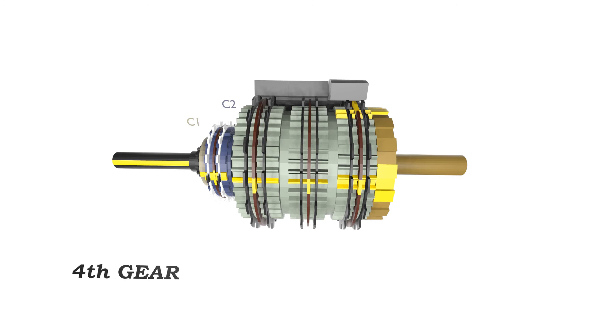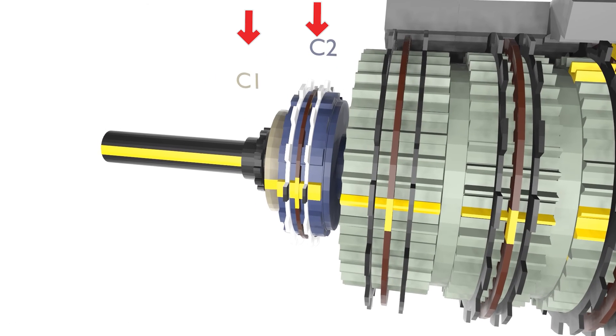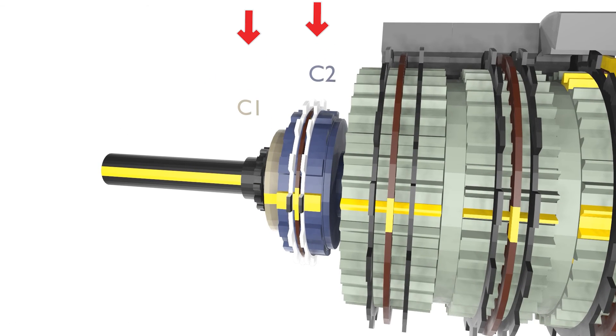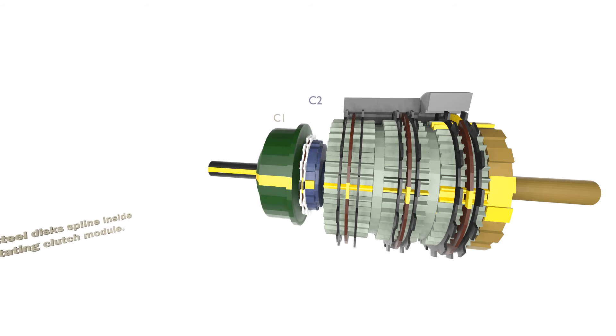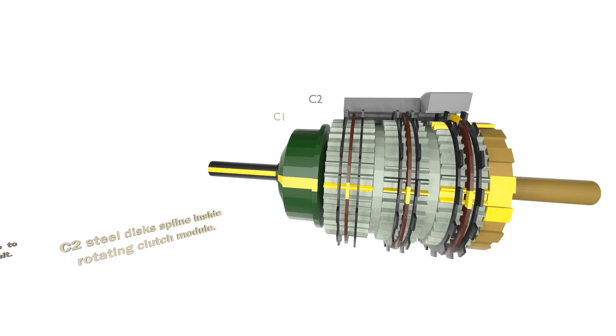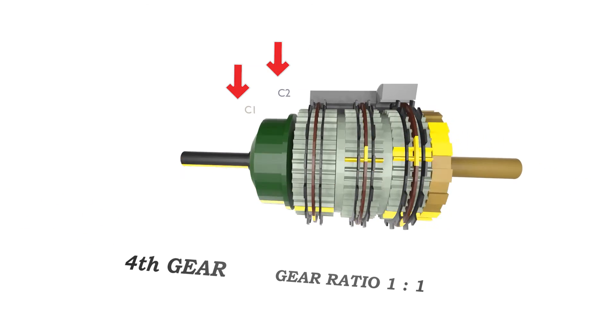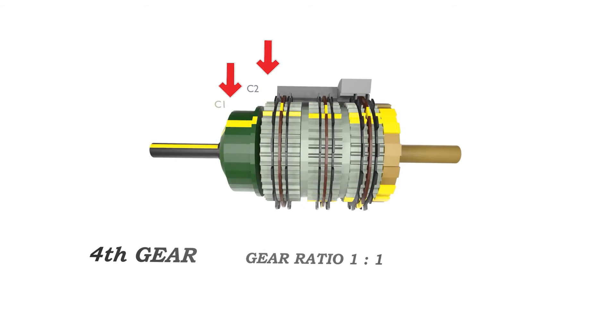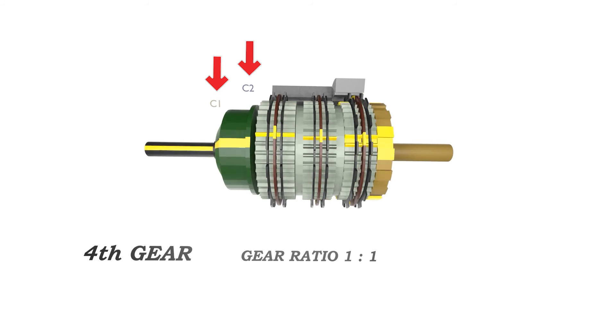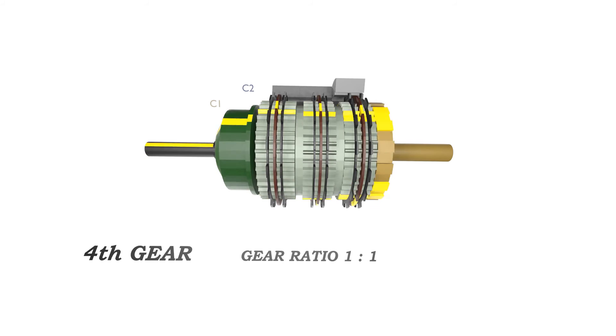To shift to 4th gear we need to engage C1 and C2. C2 clutch housing works the same as C1. C2 is now rotating. This produces a direct drive, meaning that one turn of the input shaft will deliver one equal turn out of the output shaft.